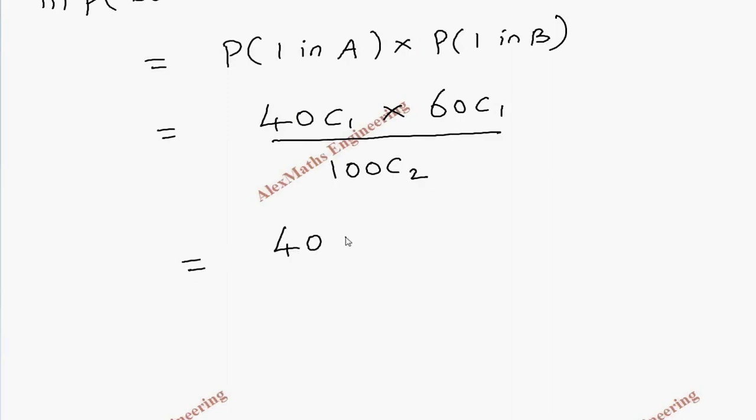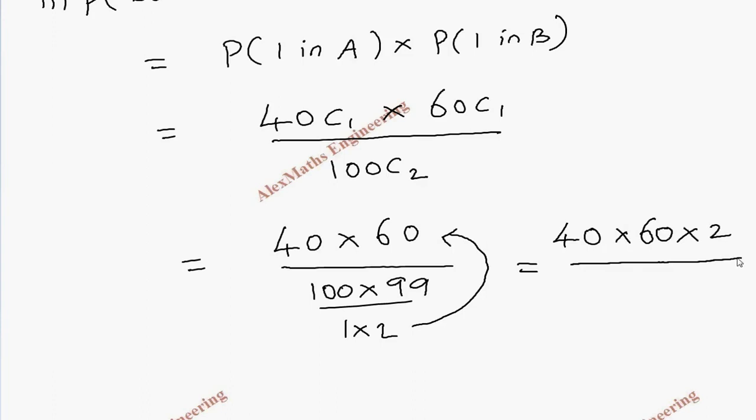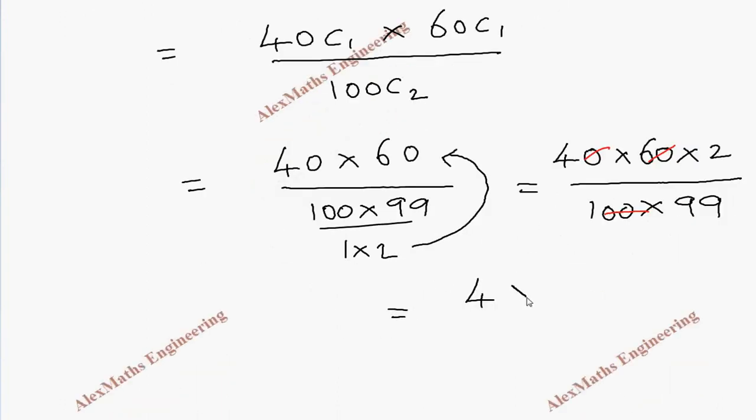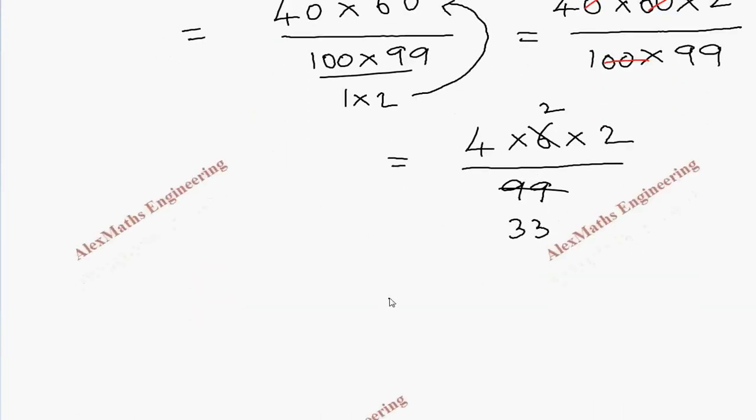Coming to the calculation, it is 40 into 60 whole divided by 100 into 99 by 1 into 2. This 2 will be carried here. So 40 into 60 into 2 whole divided by 100 into 99. We can cancel two zeros with this. In the numerator we have 4 into 6 into 2 whole divided by denominator 99. 3 table if I cut, this is 2 and this is 33. So the answer is 16 by 33.